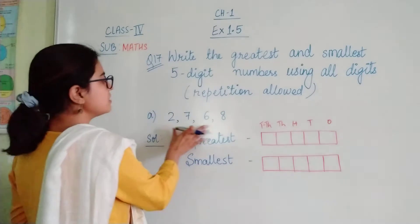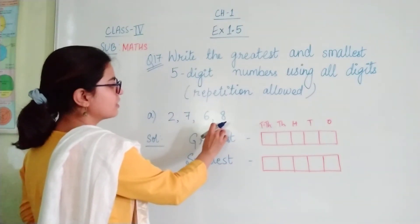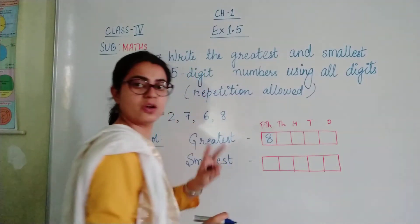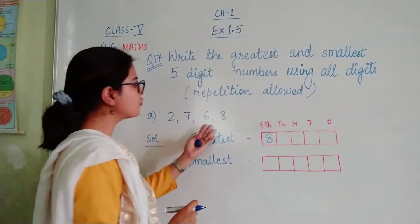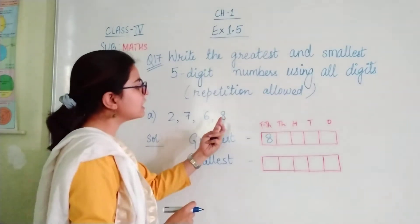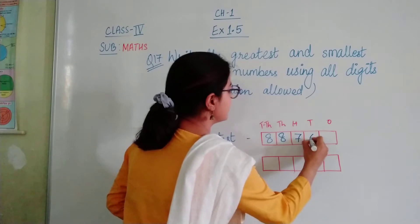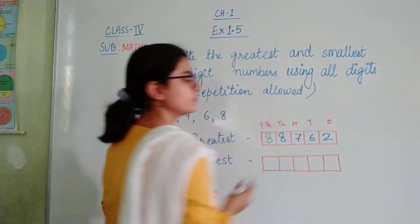That means here the greatest number is 8. So we repeat 8 twice. With these 4 digits, we are repeating 8, then 7, 6, 2.